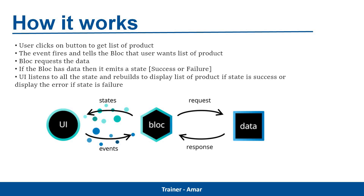The UI displays the list of products if the state is success, or it displays an error message if the state is failure. This is how BLoC works. In BLoC we have three main components: the first is the event, which is generated by the user; the second is BLoC, where we write the business logic and request data; and the third is the state, based on which the UI rebuilds itself.